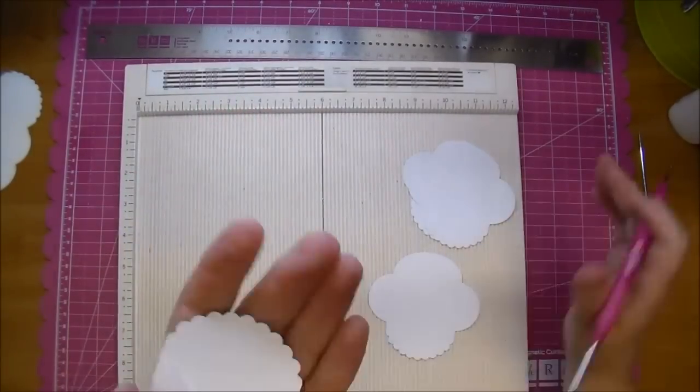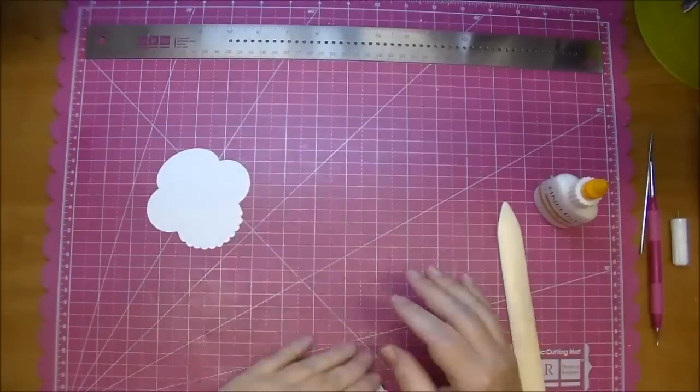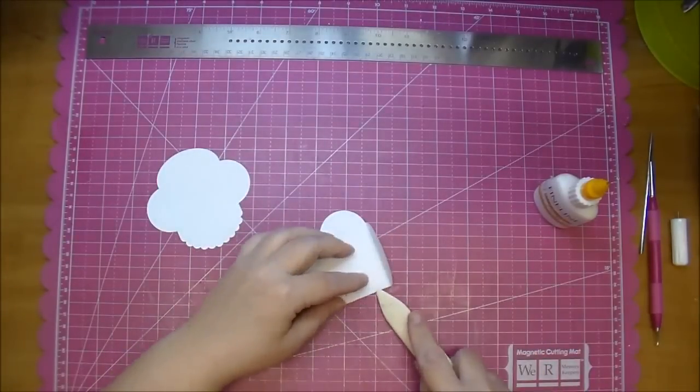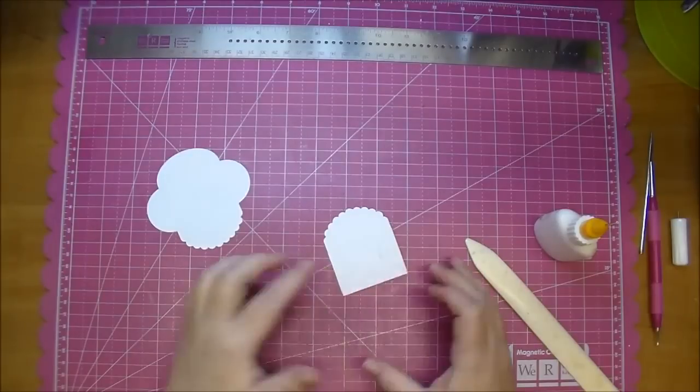And here's what a finished envelope looks like. I love the scalloped top to it. So now I'm just folding along those crease marks and adding a little bit of Scotch Quick-Dry adhesive and adhering them together.